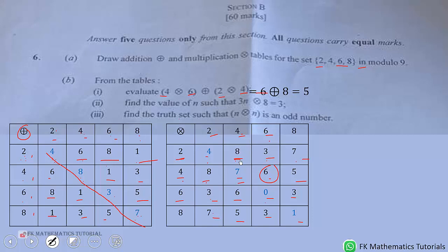You realize that you now come to the addition table. 6⊕8, so 6 plus 8 is 5. That is why the answer is 5.